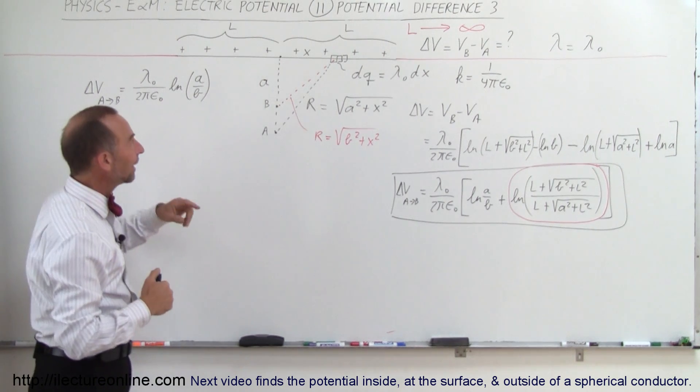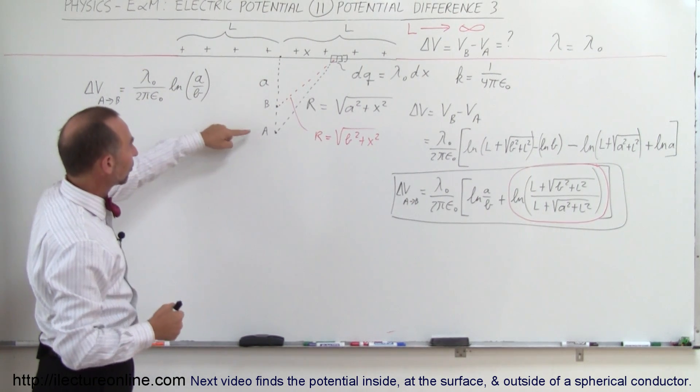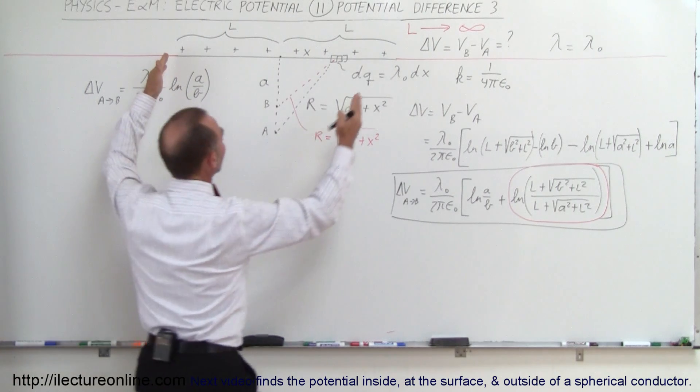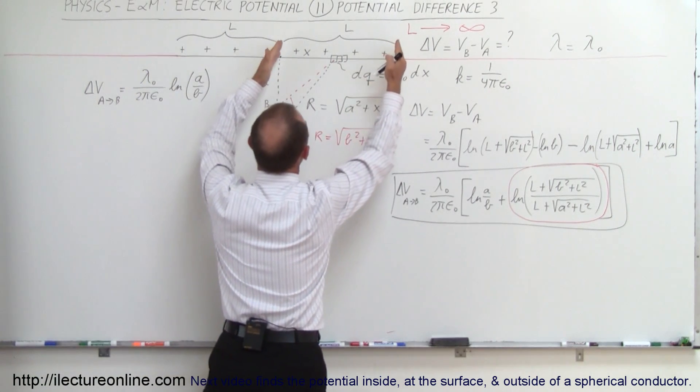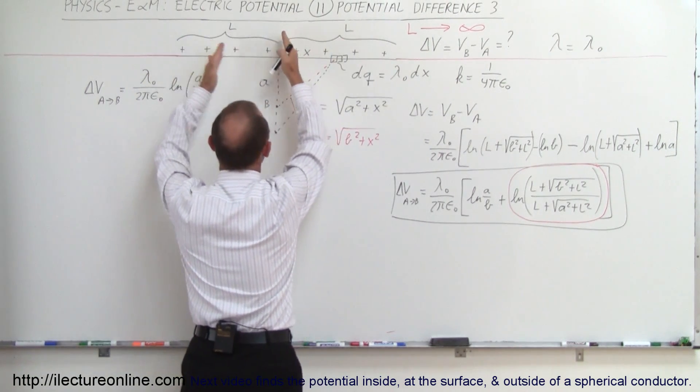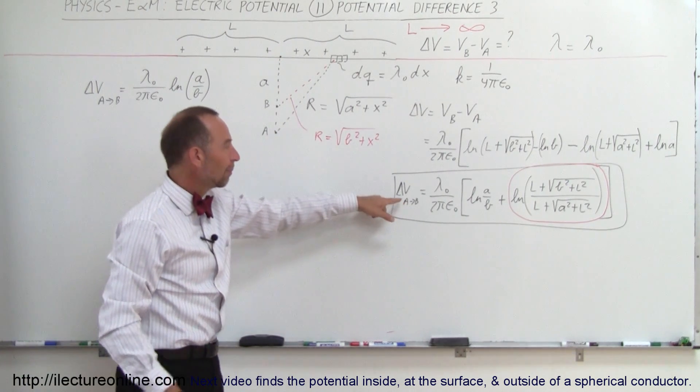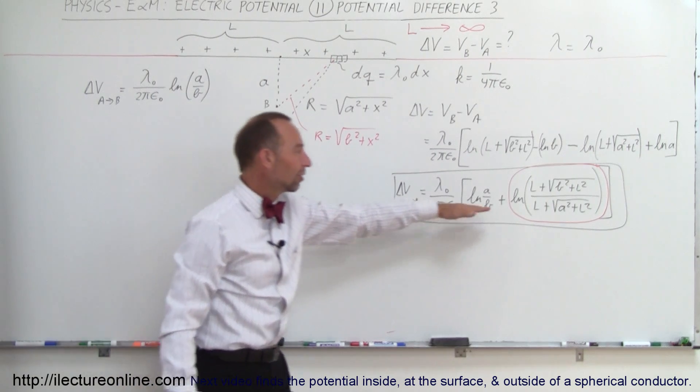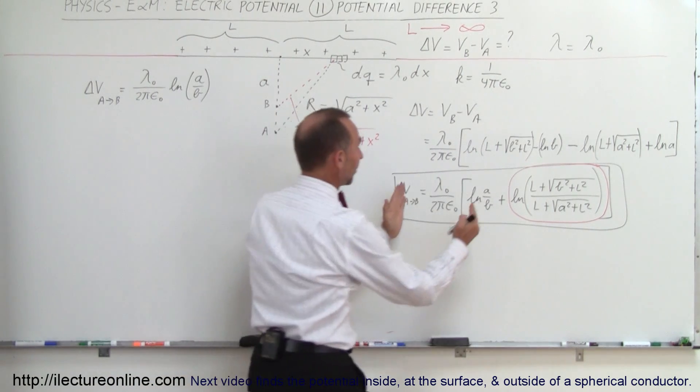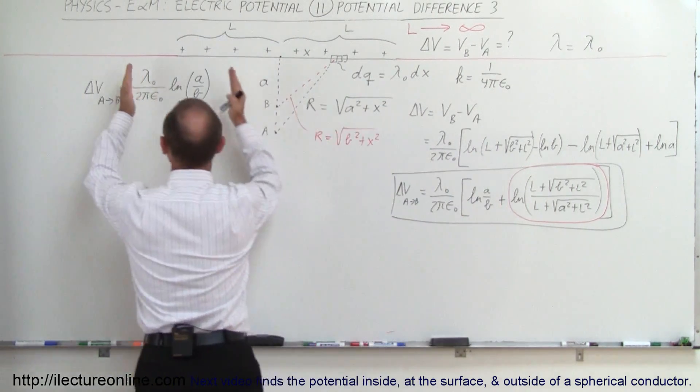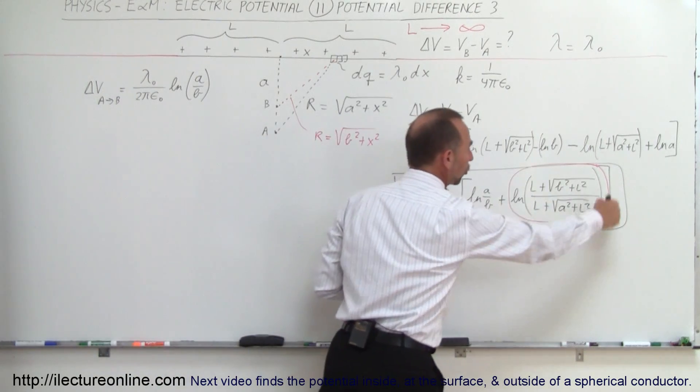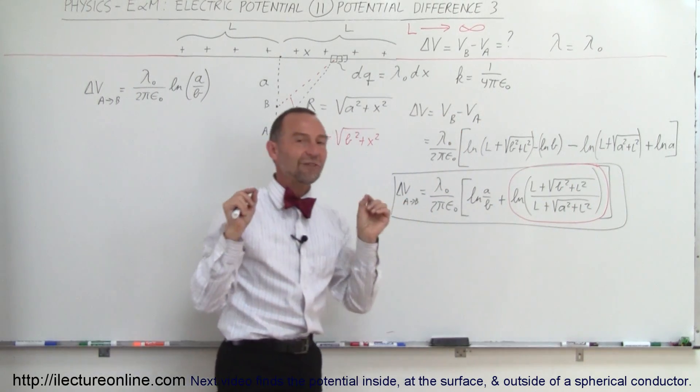In the previous video, number 10, we calculated the potential difference going from A to B simply for a finite line charge where the length is 2L—L on this side, L on that side, right there at the perpendicular bisector. We found out that the potential difference going from A to B is equal to this quantity right there. Notice that this quantity here is exactly the same as that quantity, but we have an additional term because we're dealing with a finite length.